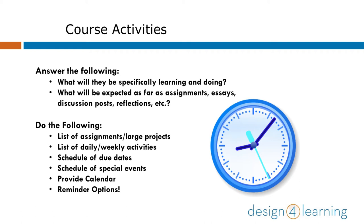After you list resources, it's always good to include course activities. Try to answer questions like: what will they be learning and doing, and what will be expected as far as assignments, essays, discussion posts, reflections, and more. To do this, you can create a list of assignments or large projects, a list of daily or weekly activities, a schedule of all due dates, a schedule of special events, and perhaps an actual calendar. In whatever learning environment you have, there may be other places to include calendars or schedules, but remember to include it in your syllabus if it can help your students. Remember that you probably won't need all of the elements we've talked about so far, but you can make your choices as to what to include based on what you think your students will need most.